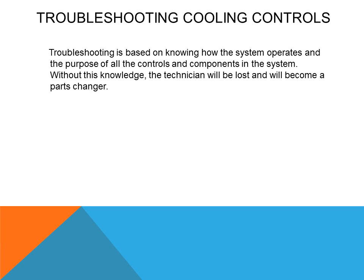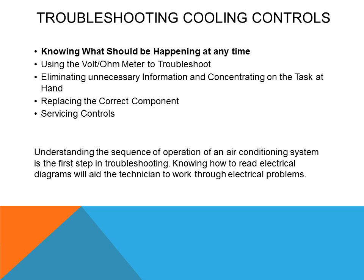Troubleshooting an air conditioning system is no different than troubleshooting any HVAC equipment. Troubleshooting is based on knowing how the system operates and the purpose of all the controls and components in the system. Without this knowledge, the technician will be lost and will become a parts changer. Understanding the sequence of operation of an air conditioning system is the first step of troubleshooting. Knowing how to read electrical diagrams will aid the technician in working through electrical problems.